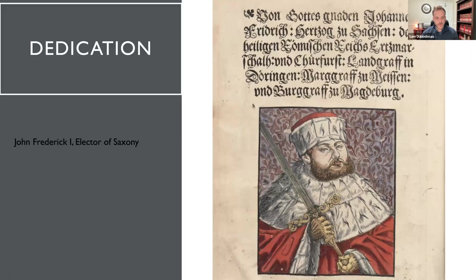The Luther Bible contains a dedication to the Elector of Saxony — in this case, John Frederick I. The politics of the Reformation are front and center on the front page. Obviously, this dedication gets excised in later editions.